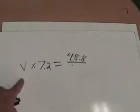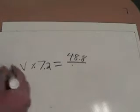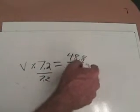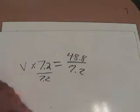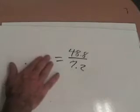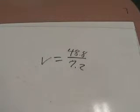Now I have to undo what's being done to V. Right now it's being multiplied by 7.2, so I divide both sides by 7.2. This goes to 1, and 1 times V is V. So what I have there is V equals 48.8 over 7.2.